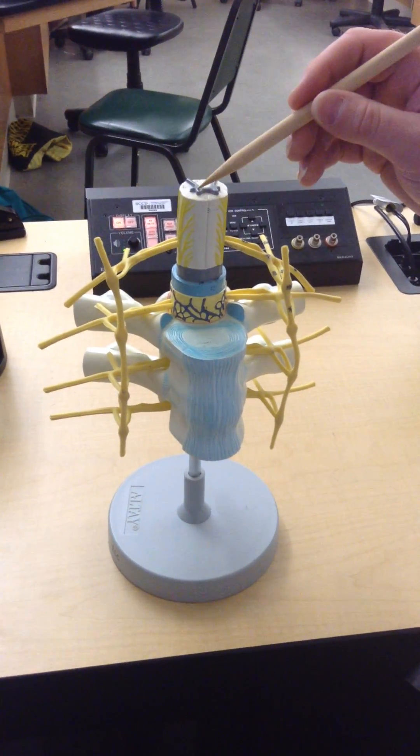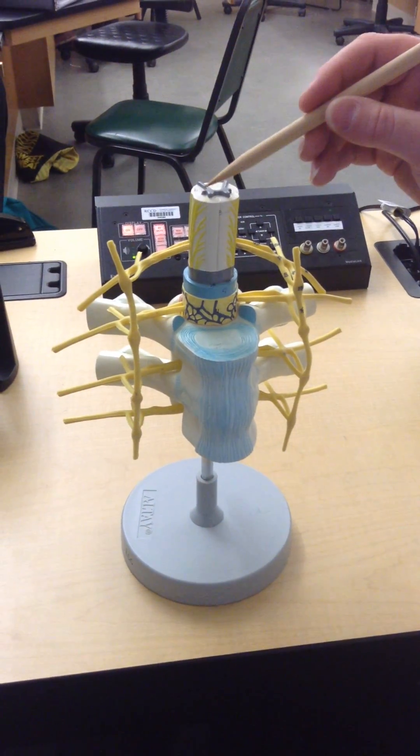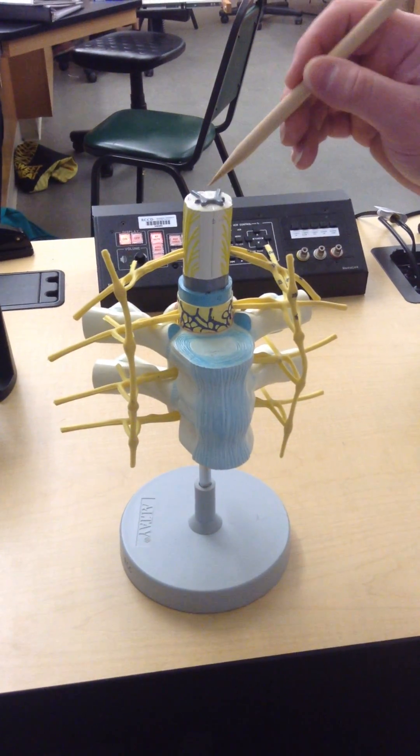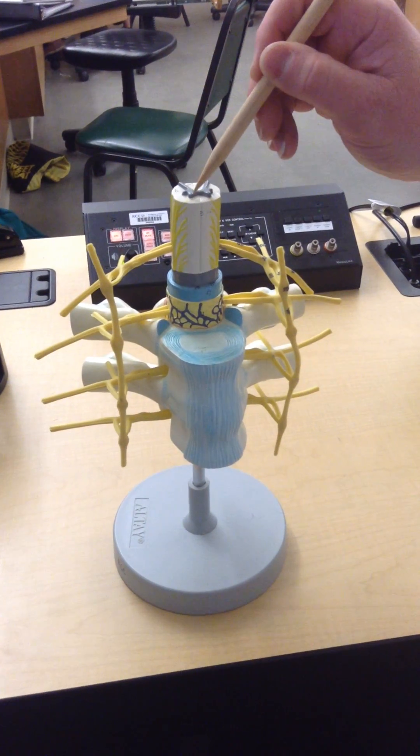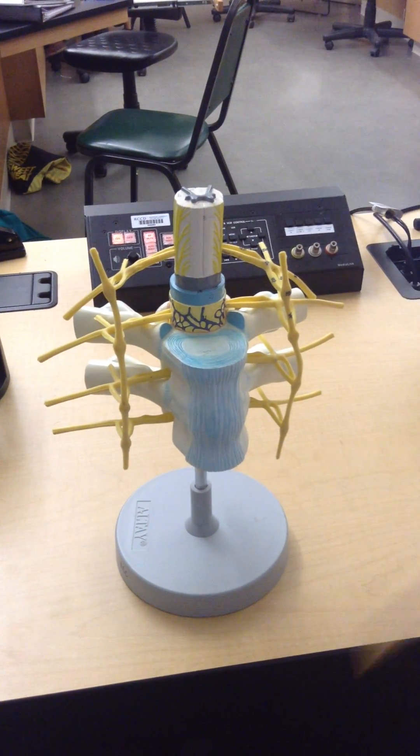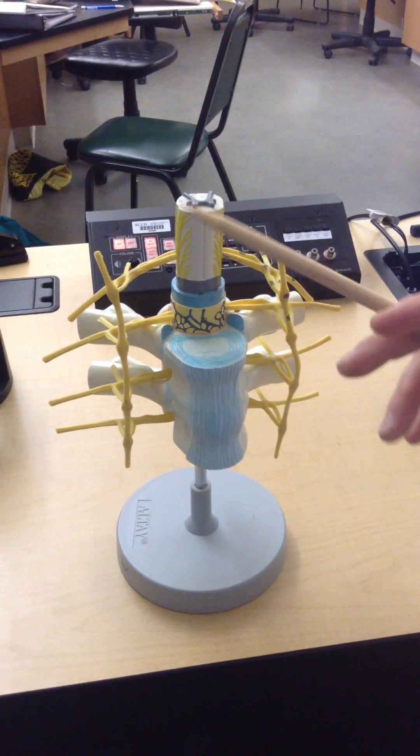However, they do travel with those alpha motor neurons, and they actually exit the spinal cord. They originate in the lateral horn, but everything exits through that ventral horn of the gray matter.